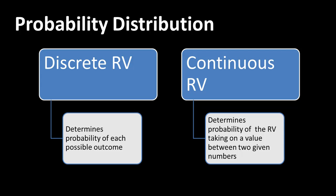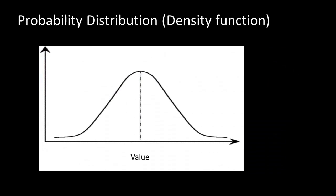Continuous random variables show the probability of the random variable taking on a value between two given numbers. That's the difference between discrete and continuous. In discrete, you say: this is the probability of this particular outcome. In continuous, because the variable is totally continuous, you cannot say the outcome will be exactly one particular value — the probability of any very specific value occurring is very close to zero. When talking about a continuous random variable's probability distribution, you're really talking about the probability of a value falling in a given range.